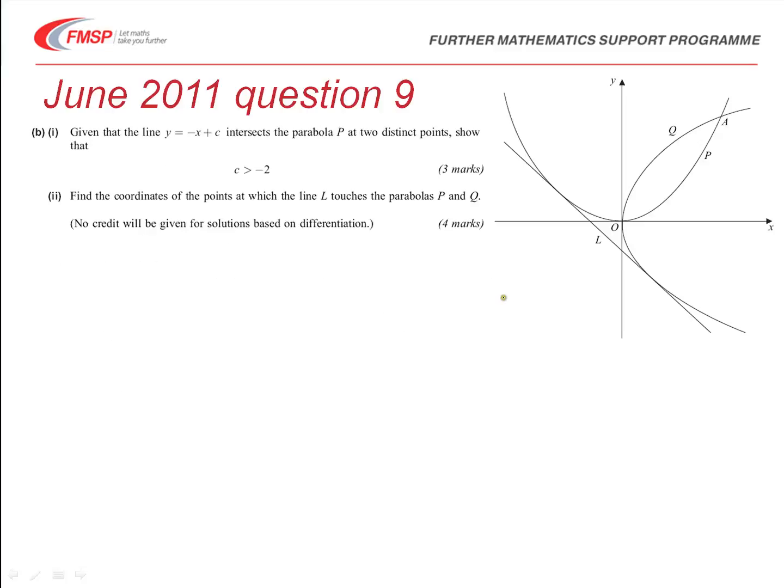Okay, moving on. Part B. You're told that the equation of this line y equals minus x plus c intersects the parabola at two distinct points. So, y equals minus x plus c is another line parallel to L going through some value c. So, c is somewhere on this y-axis. And it intersects at two points. So, rather than just touching the curve, it intersects at two places on P, not on Q. So, it intersects here and here. And it comes down somewhere parallel to this line and it will go through some value c here. You've got to show that c must be greater than negative two.